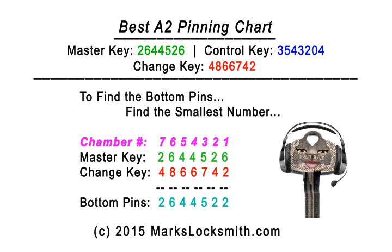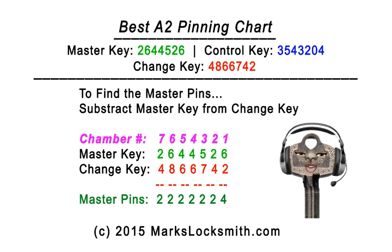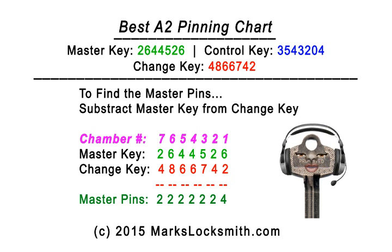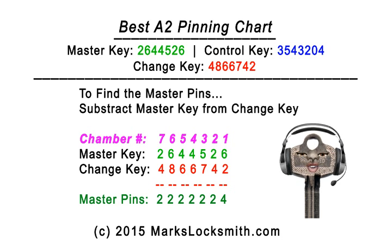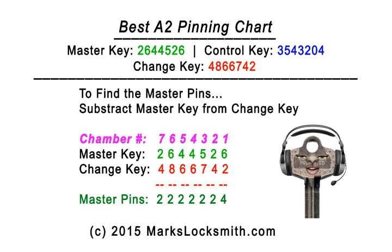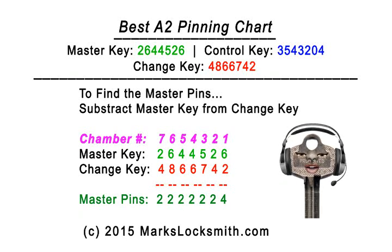These are the bottom pins. Here's how we find our master pins: we take our master key bitting information and subtract it from our change key bitting information. This chart is self-explanatory. For example, chamber seven: four minus two is two. Chamber six: six minus eight is two. Chamber four: four from six is two. All the way down to chamber one: six minus two is four. These are our master pins.